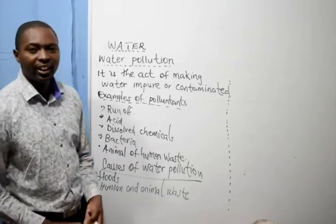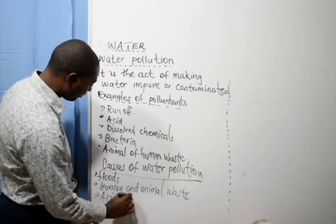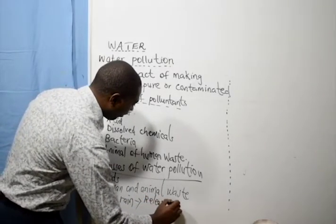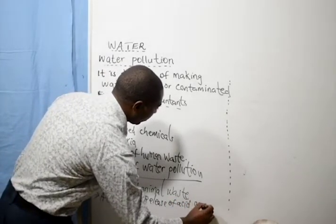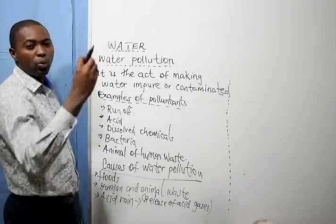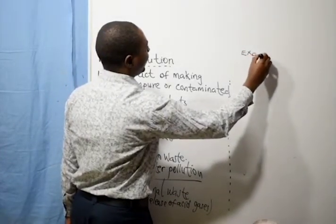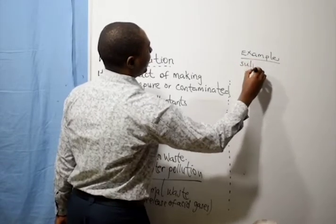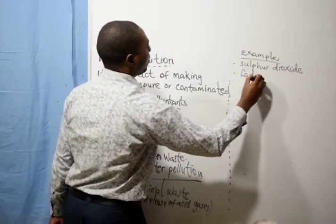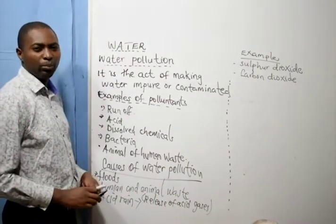Human and animal waste is a cause of water pollution. We also have acid rain. Acid rain is caused by the release of acidic gases. Once emitted into the air, they mix with the rain-bearing clouds and form acid rain. Examples of such gases are sulfur dioxide and carbon dioxide — those two gases are said to be acidic gases.